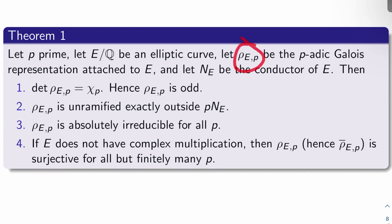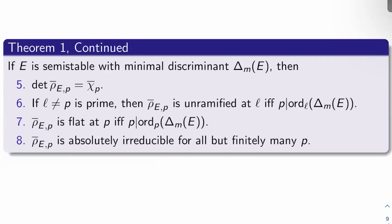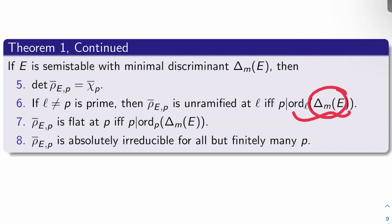The second half of Theorem 1 deals with rho-bar_{E,P} and these same kinds of properties for the residual mod-P representation. If E is semi-stable — meaning everywhere good or multiplicative reduction — and delta_M(E) is the minimal discriminant of E, then four things are true. First, det(rho-bar_{E,P}) = chi-bar_P, so rho-bar_{E,P} still has cyclotomic determinant just like rho_{E,P}. Second, if L is a prime different from P, then rho-bar_{E,P} is unramified at L if and only if P divides the L-adic valuation of the minimal discriminant of E.